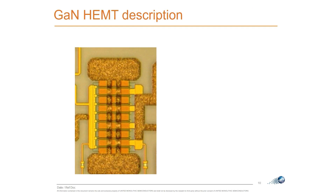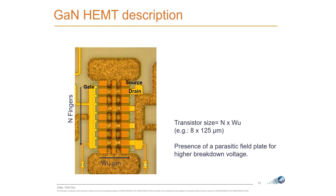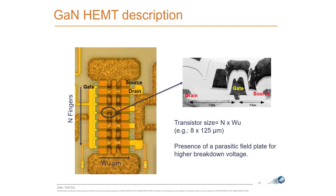Regarding GaN specificities compared to other technologies: the gate, source, and drain are not unique to GaN. What is specific is the presence of the field plate on top of the gate, which was introduced to minimize the maximum electric field — distributing the field more evenly to increase breakdown voltage. This field plate introduces additional parasitics at the gate-to-source and gate-to-drain capacitances.